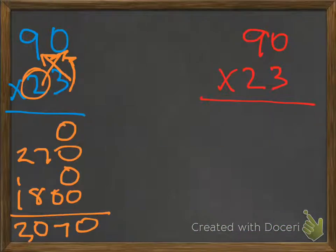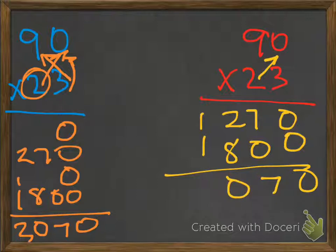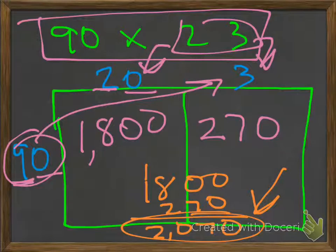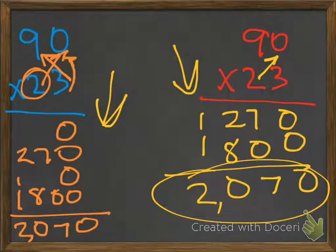And if you want to do it the regular way, let's take a look at that. So 0 times 3 is 0, 3 times 9 is 27. Add our 0. 2 times 0 is 0, 2 times 9 is 18. And we get the same answer. So no matter which way you use it — with an array, partial products, or the standard algorithm — you're going to get the same answer.